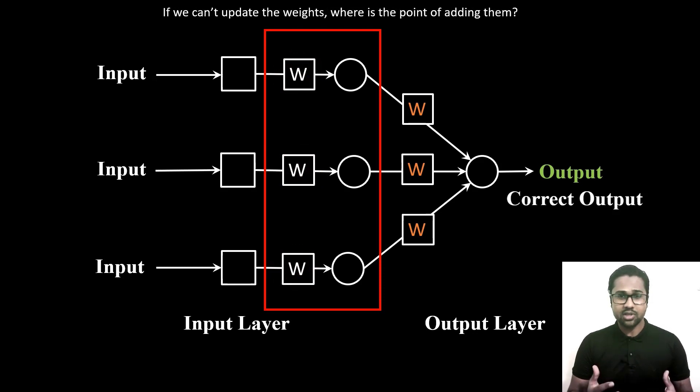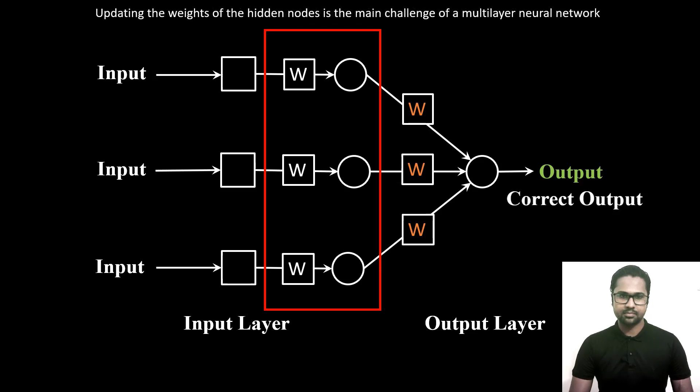If we can't update the weights, where is the point of adding them? Updating the weights of hidden nodes is the main challenge of a multi-layer neural network.